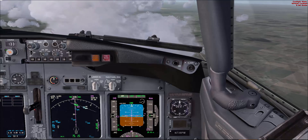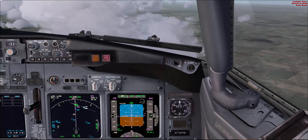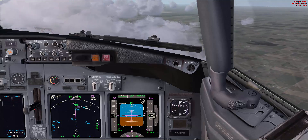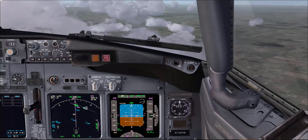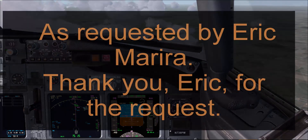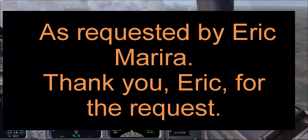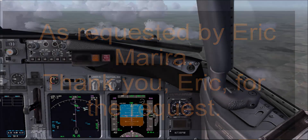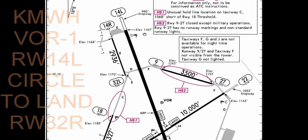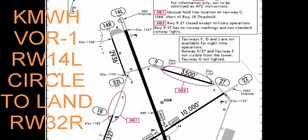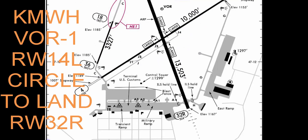Hello, this is Abdelmati Asira. I would like to welcome you to another Boeing 737 video tutorial. In this video, we'll talk about the approach setup and briefing in the simulator training. For this example, we'll be using Moses Lake Airport VOR 14L approach, circling to land runway 32 right.